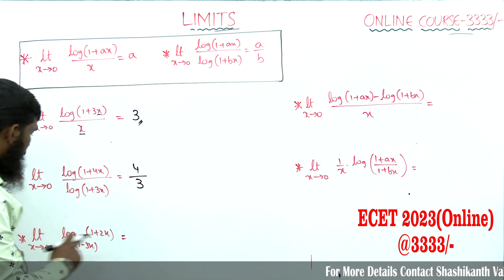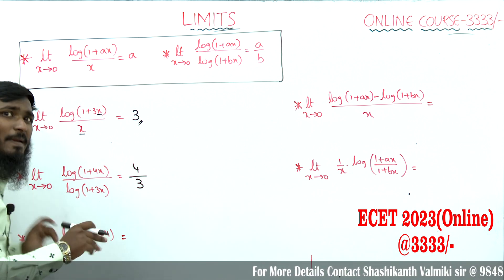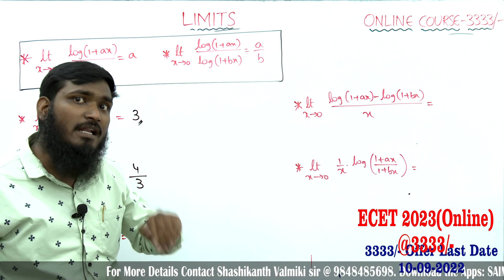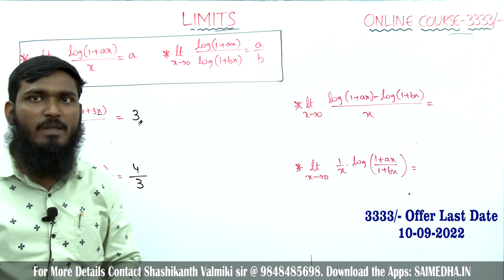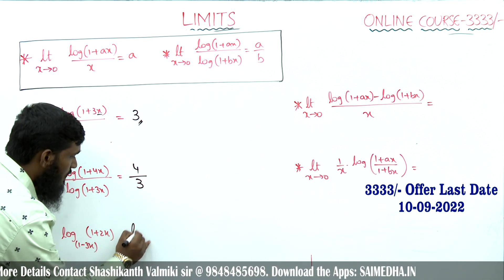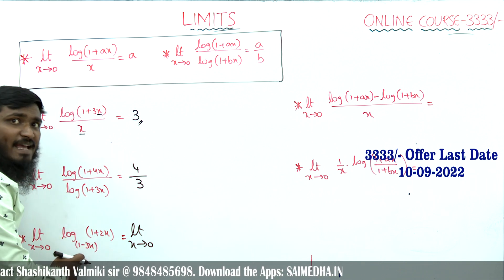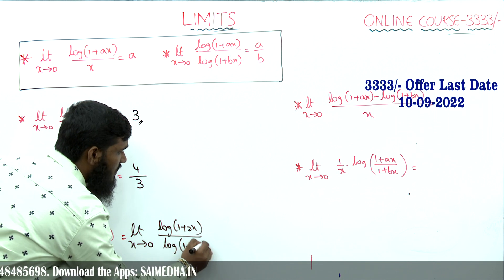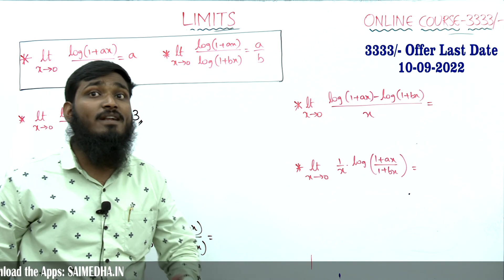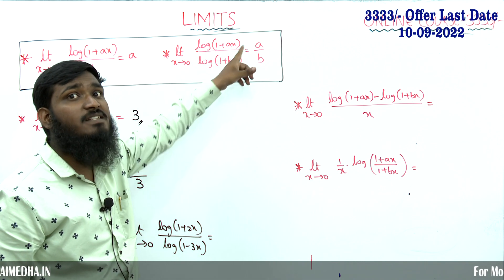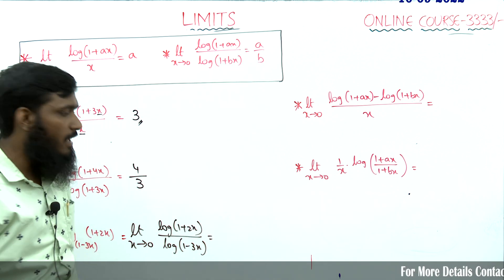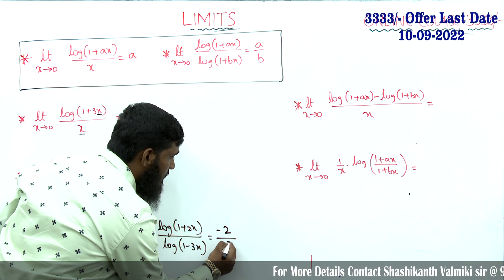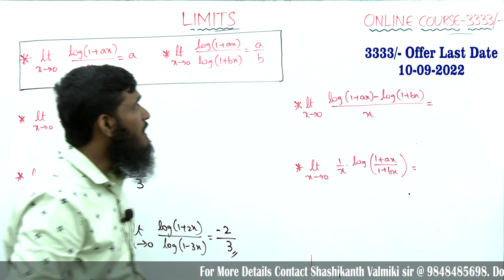Next: limit x tends to 0, log base (1 minus 3x) of (1 + 2x). Using the change-of-base formula, log_b(a) equals log a divided by log b, we rewrite this as log(1 + 2x) divided by log(1 minus 3x). This is in the form log(1 + ax) over log(1 + bx), where a equals 2 and b equals minus 3, giving the answer minus 2 over 3.